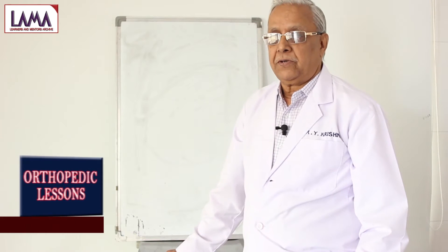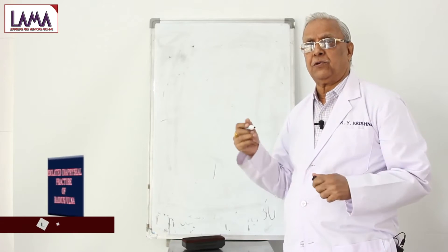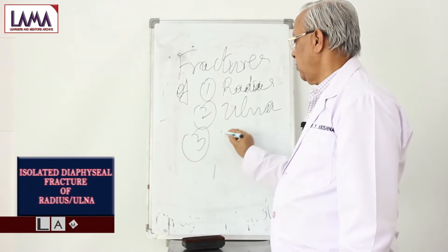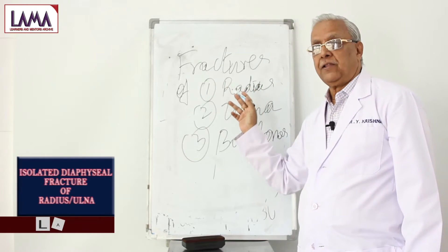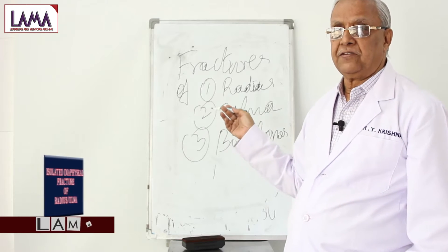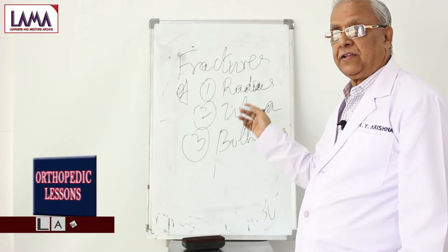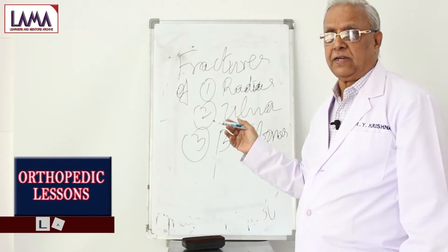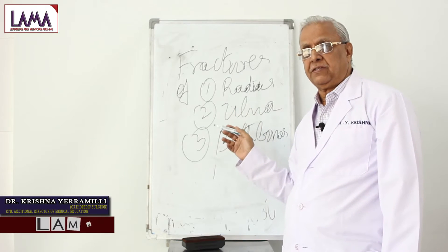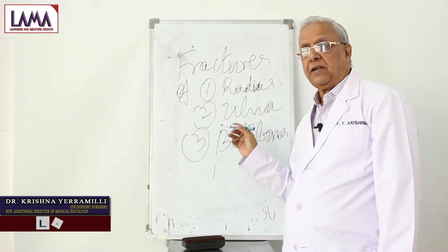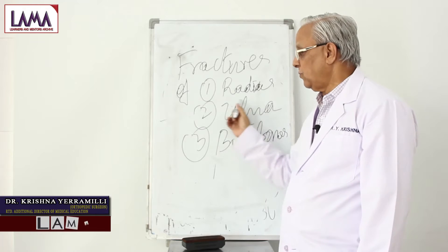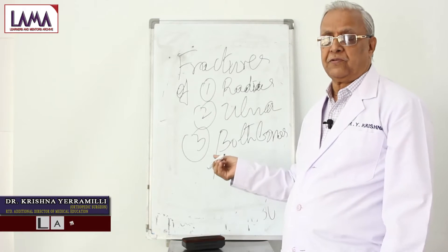Today I am going to talk about fracture of both bones of the forearm: radius, ulna, and both bones. Whenever a fracture of radius or ulna occurs in isolation, we call them isolated diaphyseal fractures of radius or ulna. Very often both things are combined, that is fracture of both bones of the forearm.